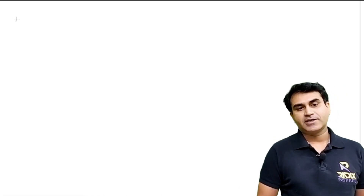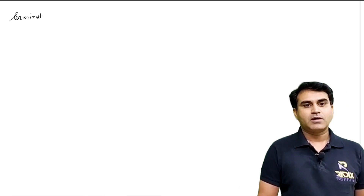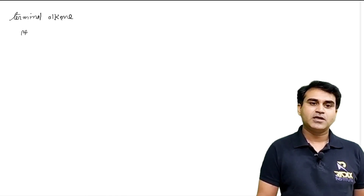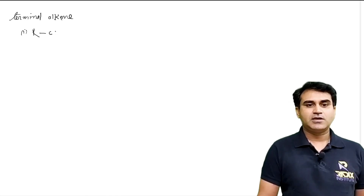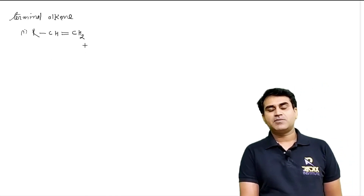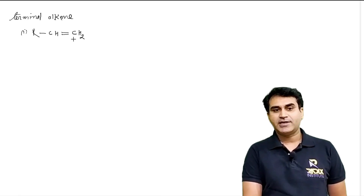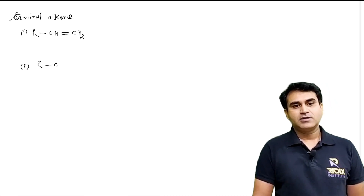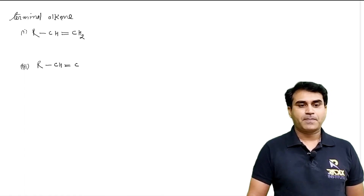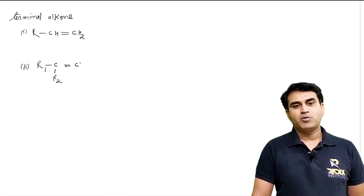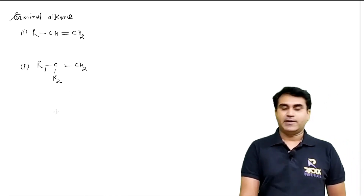I am taking one terminal alkene. Terminal alkene जैसे R-CH=CH2. Terminal का मतलब at the end of the carbon chain there is a double bond. और एक और terminal alkene: R1R2C=CH2. दो terminal alkene ले लिए.